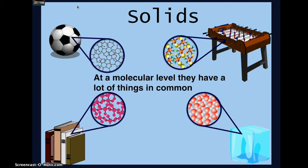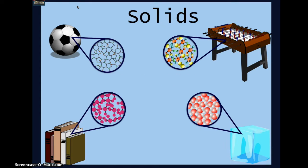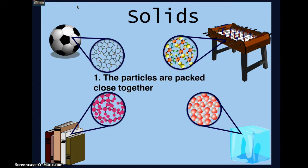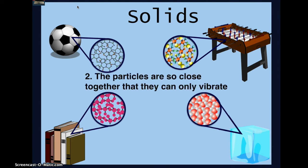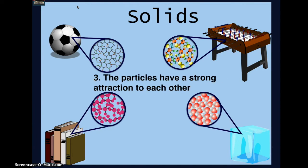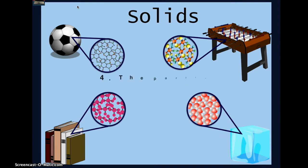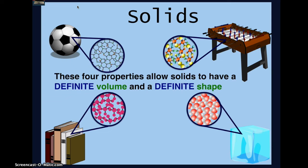At a molecular level, they have a lot of things in common. The particles are packed close together — so close together, they can only vibrate. The particles have a strong attraction to each other, and the particles can't be compressed. These four properties allow solids to have a definite volume and a definite shape.